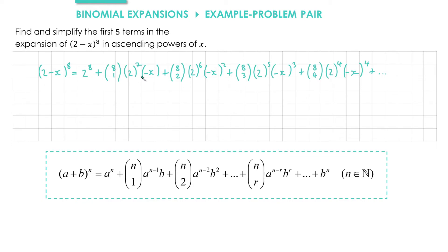On the next line, we'll do a bit of simplifying, and we'll also evaluate these binomial coefficients. So 2 to the 8 is 256.